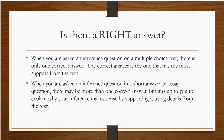When you're asked an inference question in a short answer or essay question, there may actually be more than one correct answer. But it's up to you to explain why your inference makes sense by supporting it using details from the text. You can't just say, well, I think he's doing this because he has a fever and he's delirious. You have to show me the evidence in the text that says he has a fever and is delirious, in addition to telling me what delirium from a fever is like.